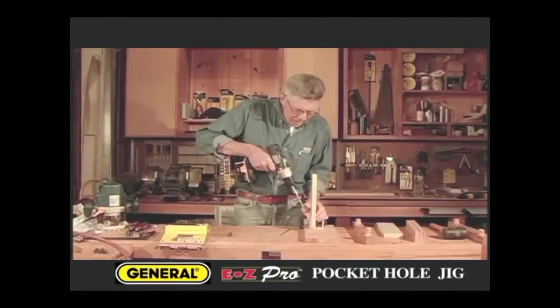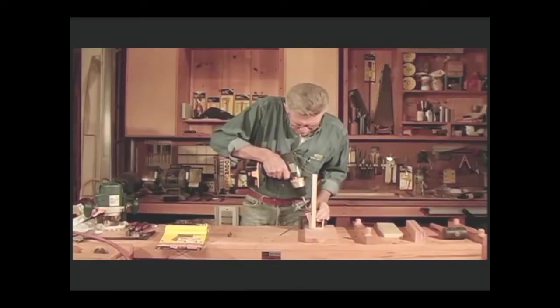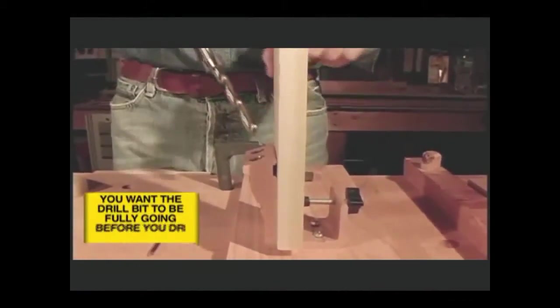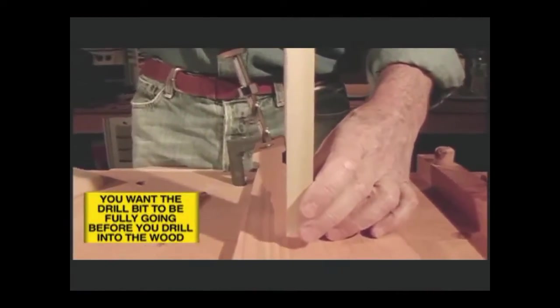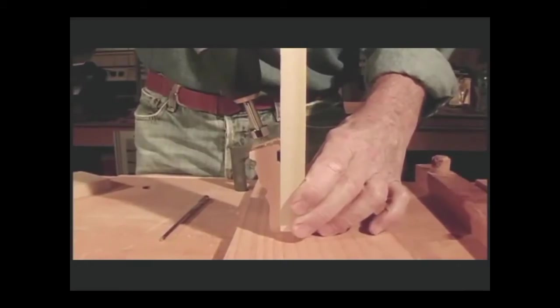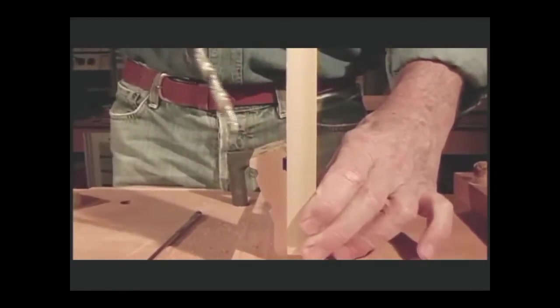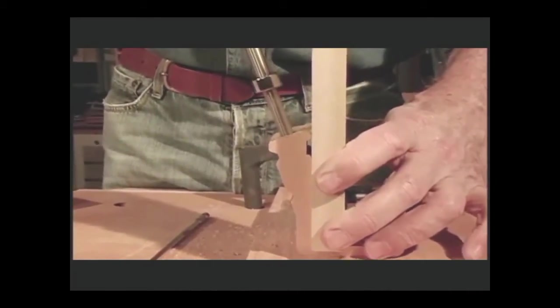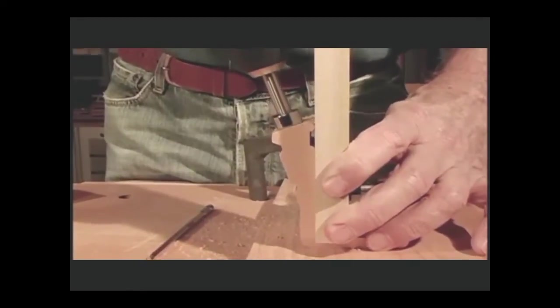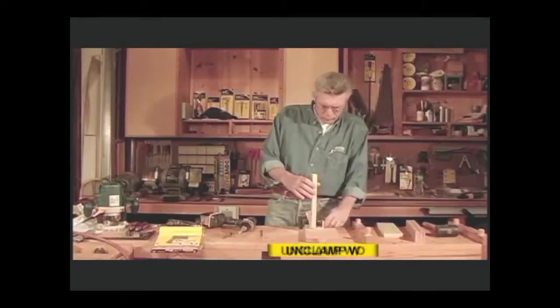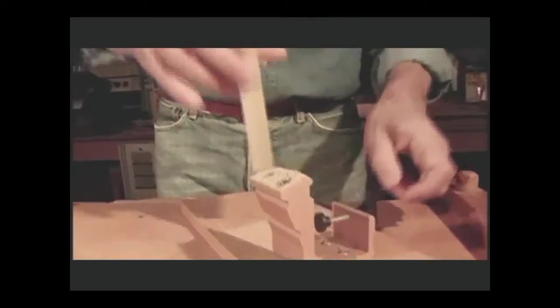All we have to do to drill the pocket holes is put the drill bit in the guide. Now you want the drill bit to be in the guide and turning at its full rpms when you begin cutting. Very simple. Once done, do the next. Release the clamp. There's your pocket holes.